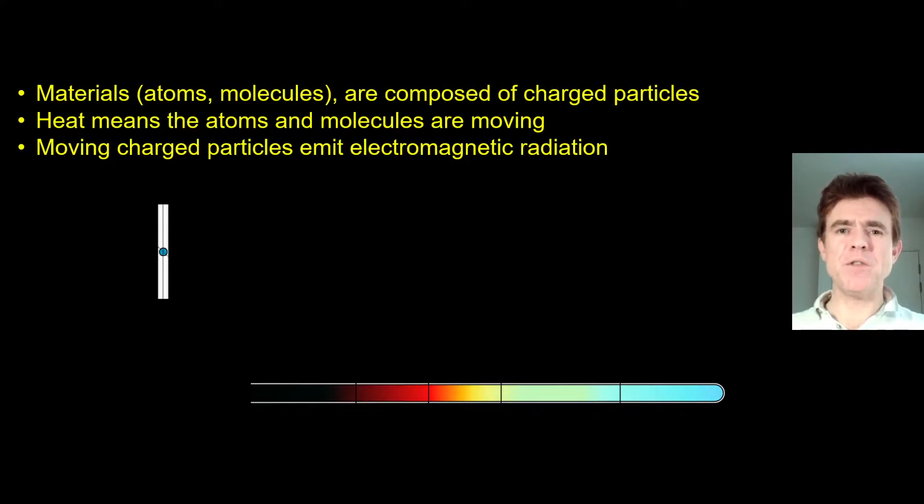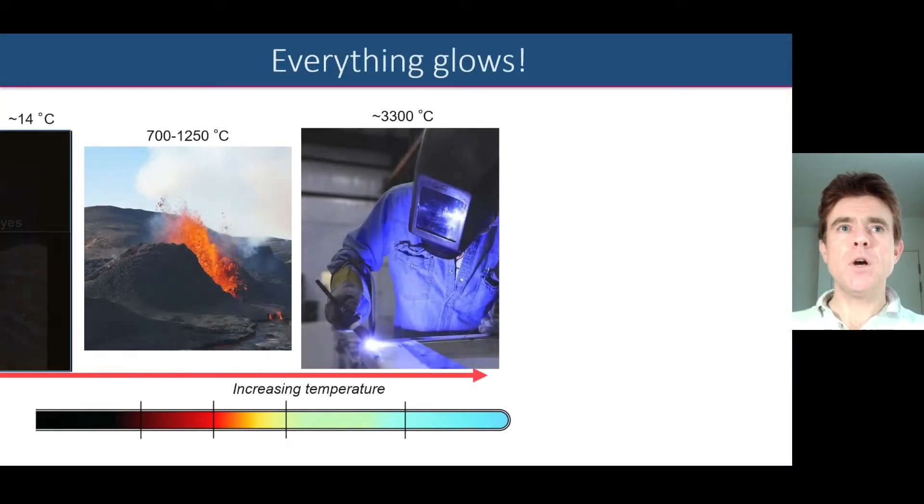So what is the mechanism behind that? Well, it's perhaps quite easy to understand that materials, objects are made up of atoms and molecules, which are composed of charged particles. Now, we know that objects have a certain heat energy. They're not at zero degrees Kelvin in general. And therefore, the atoms and molecules are moving around. We have charged particles moving around in various ways. And therefore, we have emission of electromagnetic radiation.